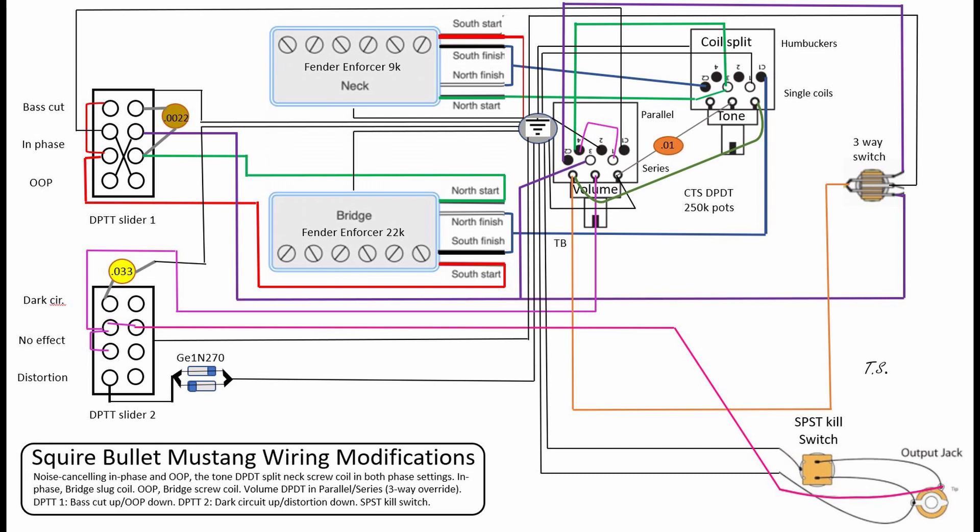And then coloring those switches. So I have a vintage pickguard and vintage colored pickups, and the plastic comes quite white, so staining it to be a little bit more yellowed. And then third, drilling out the knobs for the CTS pots.